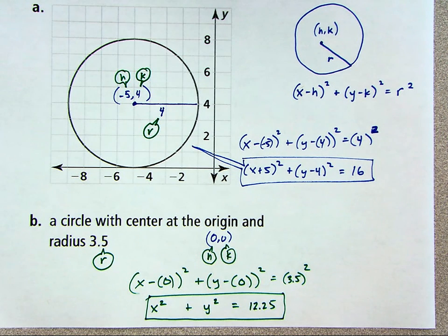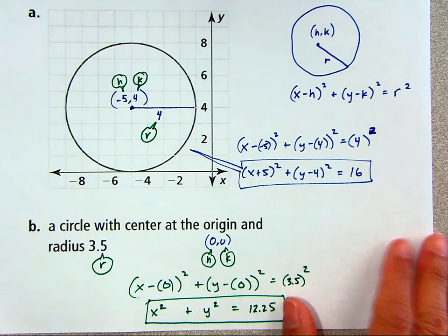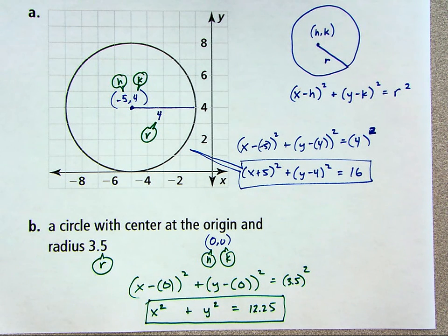All right. So that's how you can write the equations of circles. You just need three things. The horizontal position of the center, the vertical position of the center, and the length of the radius.